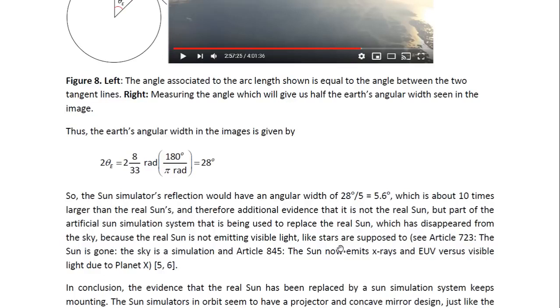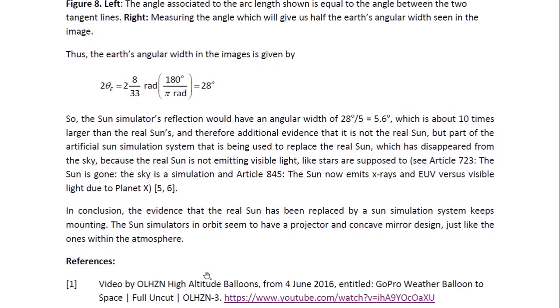So that's additional evidence that this is not the real Sun. But, of course, we have overwhelming evidence already that this cannot be the real Sun. It's a Sun simulator. And these Sun simulators replace the real Sun, which has disappeared from the sky, because the real Sun is not emitting visible light, like stars are supposed to. And you may look at Article 723, entitled, the Sun is gone, the sky is a simulation. And Article 845, entitled, the Sun now emits X-rays and extreme ultraviolet versus visible light due to planet X.